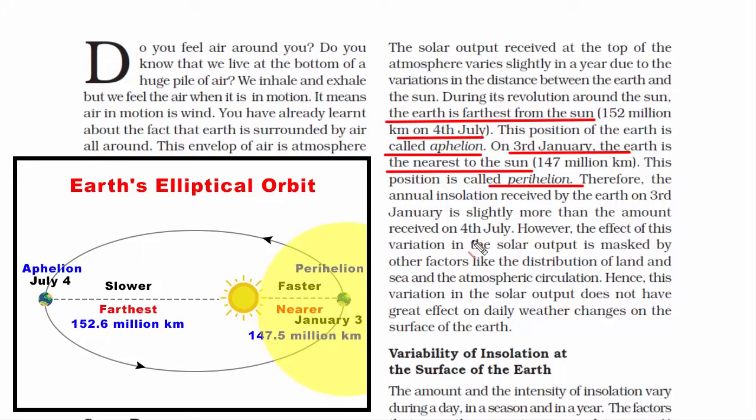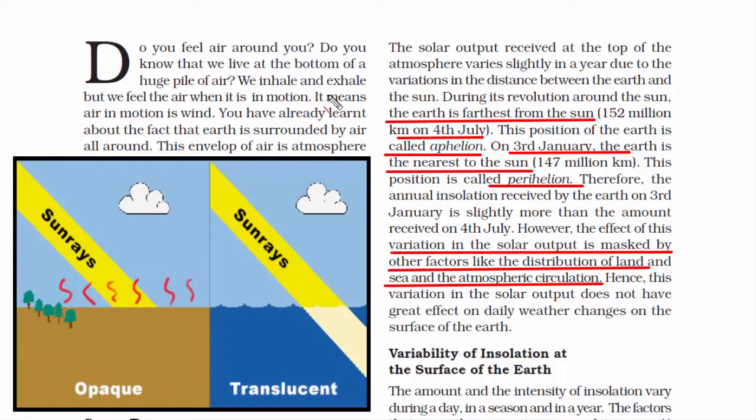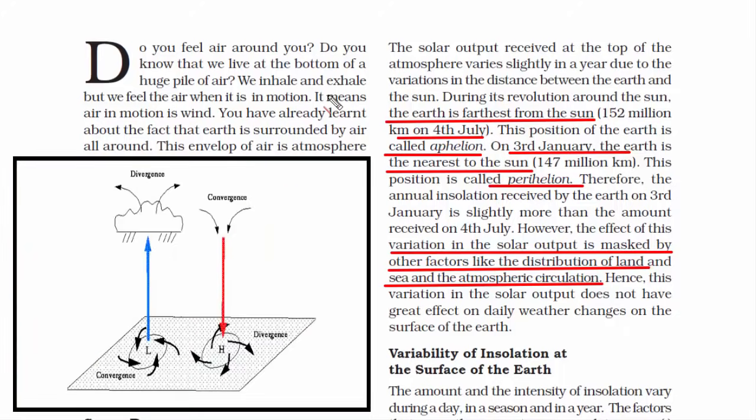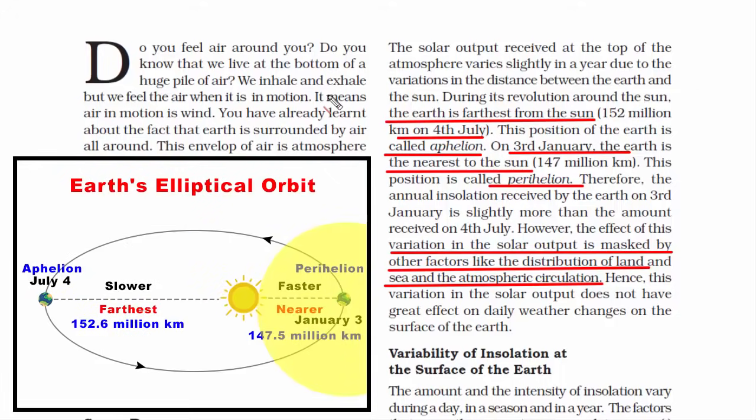This is the theory part. In reality, you will not see the effect. On July 4th, you will not feel that the heat is less, or on 3rd January, you will not feel that the day is very warm. The reason is pretty simple. All this theoretical part does happen in reality, but then it gets hidden by other factors, like the temperature distribution of land and sea, differential heating pattern, and atmospheric circulation. These factors actually hide the effect of insulation caused by aphelion and perihelion on earth's weather.